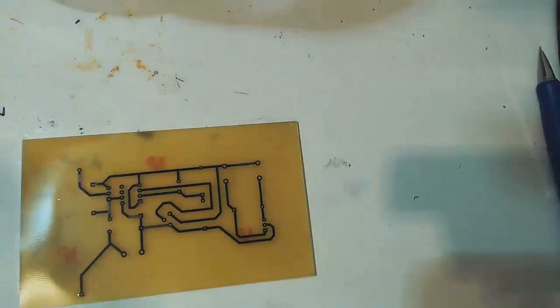And now we have an etched PCB, but we've still got toner on the traces. So we need to remove the toner, and we've got all this etchant left that I need to figure out what to do with.